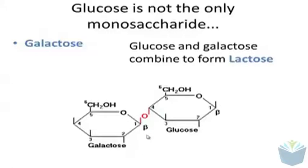You might have heard of this before. If individuals are lactose intolerant it means they cannot digest lactose and therefore they have irritable bowel or some form of reaction to that. You can see here that this forms a one and four glycosidic bond, because this is carbon one and this is carbon four.